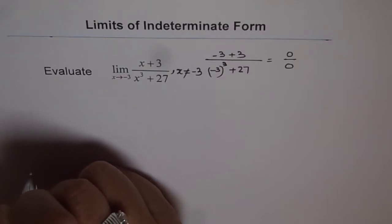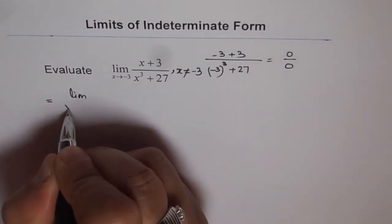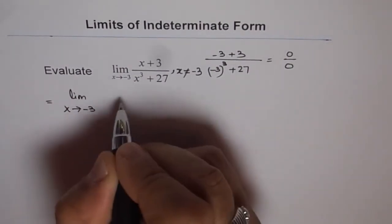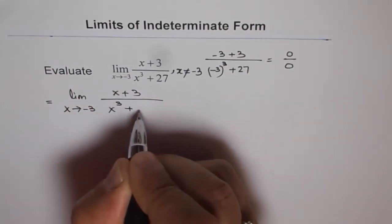And if it exists, what is the value? So we'll solve for it. Limit as x approaches minus 3, and we have x plus 3 over x cube plus 27.